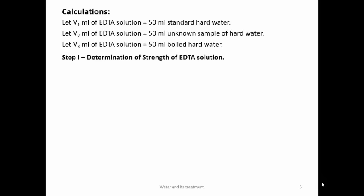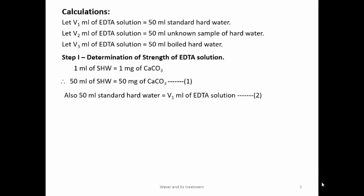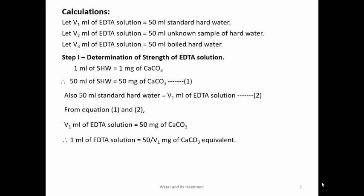Step 1: determination of strength of EDTA. Standard hard water is prepared with 1 gram of CaCO₃ per liter, so 1 mg is dissolved in 1 mL. We pipette out 50 mL, corresponding to 50 mg of CaCO₃. Since 50 mL of standard hard water corresponds to V₁ mL of EDTA, then V₁ mL of EDTA corresponds to 50 mg of CaCO₃. Therefore, 1 mL of EDTA corresponds to 50/V₁ mg of CaCO₃ equivalent — that is the strength of EDTA.